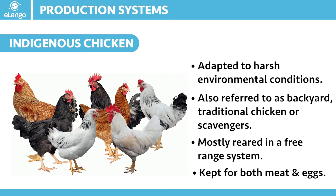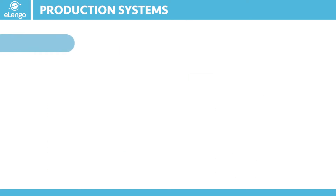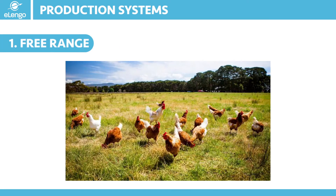With the semi-intensive method, you take the free range system and improve it so that we are able to get better production out of it. As I said, we are going to focus more on the semi-intensive method as we progress with the course. Let us start by looking at the traditional or free range system.